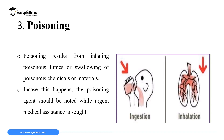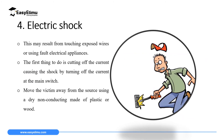The third accident and injury in the laboratory is poisoning. Poisoning might result from inhaling poisonous fumes or swallowing poisonous chemicals and materials. This is common among students who don't follow lab rules and bring food inside the laboratory — food may become contaminated with chemicals and cause poisoning. In case this happens, the poisoning agent should be noted and medical assistance sought immediately so that your life can be saved.